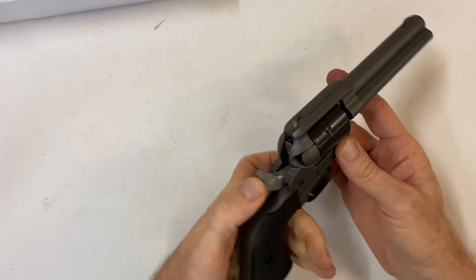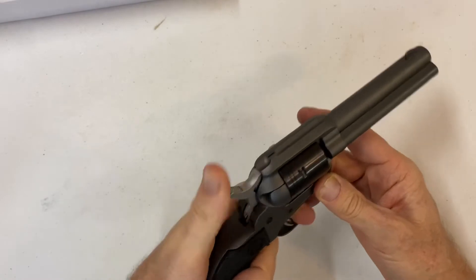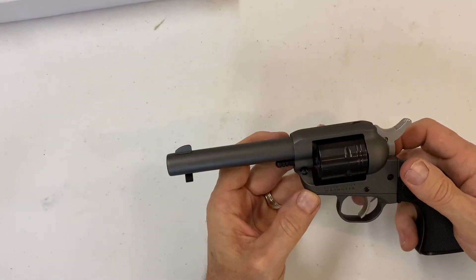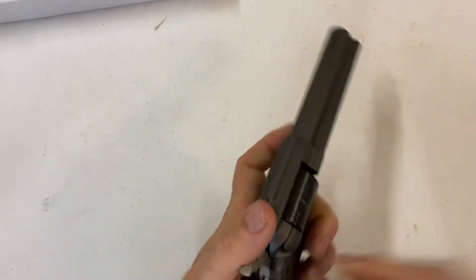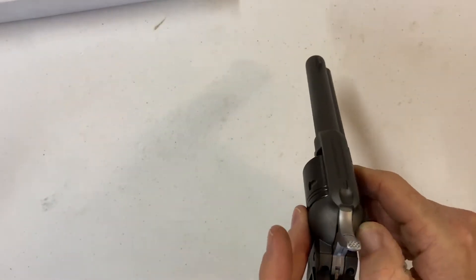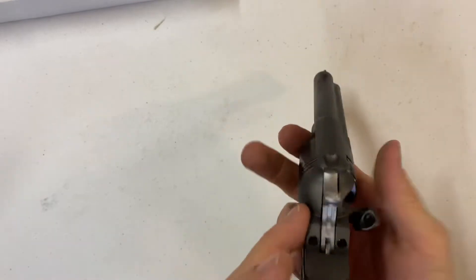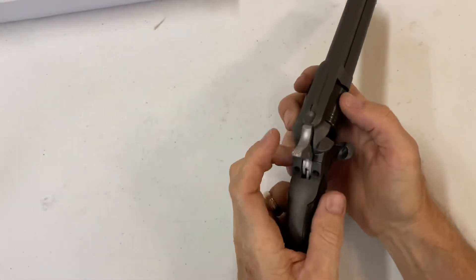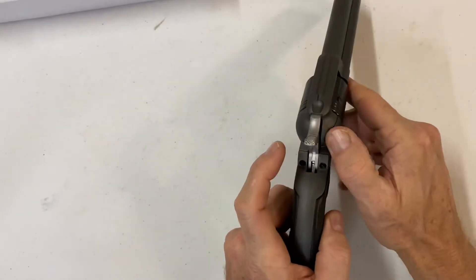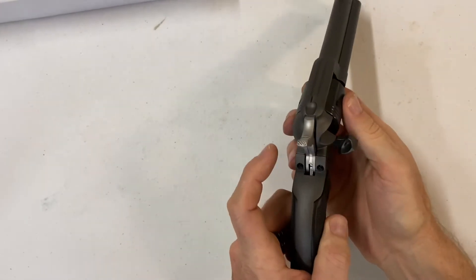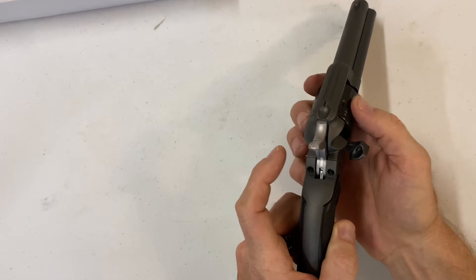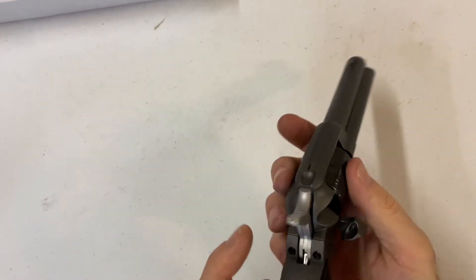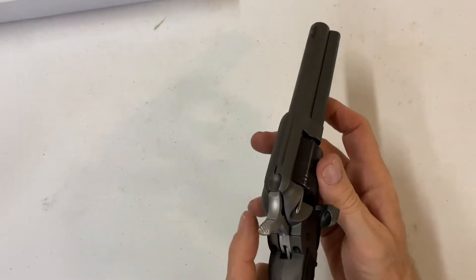Single action. To load this guy, for one thing it is empty, there's nothing in there. When you pull the arm back, the cylinder spins freely, so it makes it real easy. Then you have this guy right here to pull everything out.